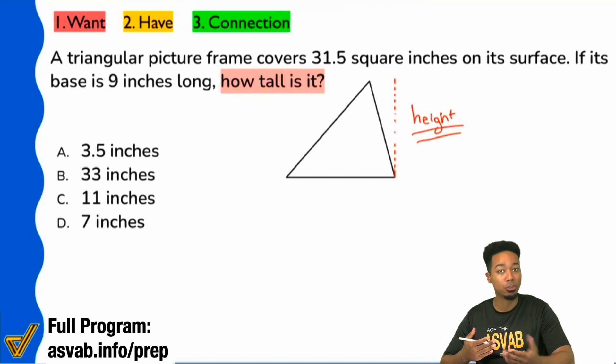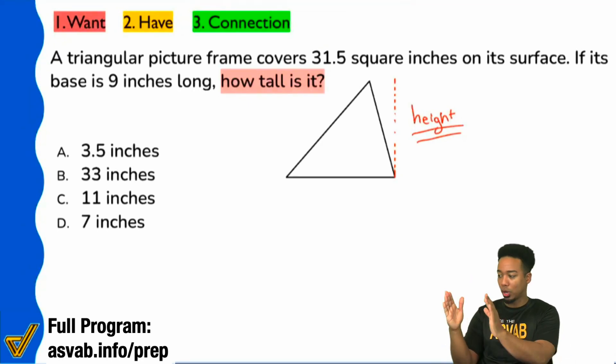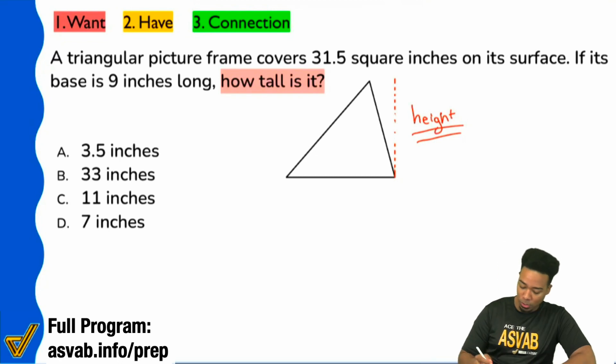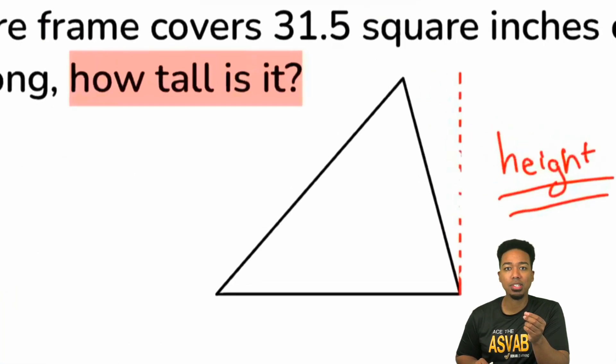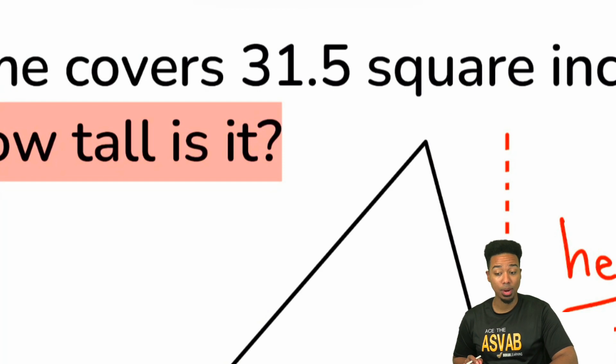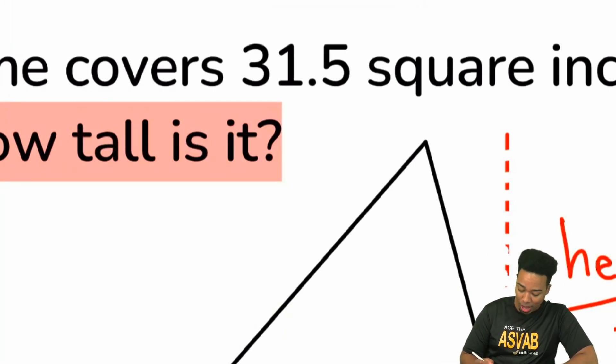Now let's take a look at the information. Now that we know, now that we see that this is just a triangle and we want its height, what information is given to us? Well, right over here it says that triangular picture frame covers 31 and a half or 31.5 square inches on its surface. My party people, remember this. If this is the first time you're hearing this, please write this down. It is not about what the numbers are. It's about what they mean. So a lot of us are going to be fixated on that 31.5 and we're going to write that down, right? Naturally when it comes to a math word problem, we're going to write the numbers down. That's fair. What isn't fair is thinking that that's the only thing you have to write down.